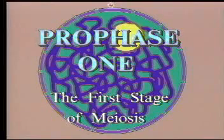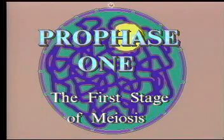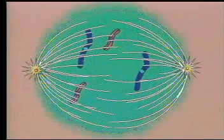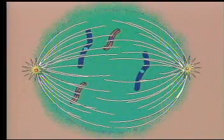The earliest part of the first stage of meiosis, called prophase 1, begins just as it does in mitosis. Chromosomes form from chromatin, and these chromosomes contain DNA replicated during the preceding interphase.